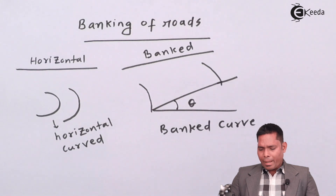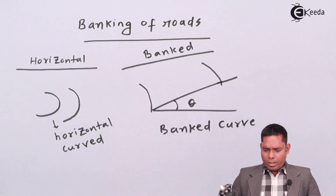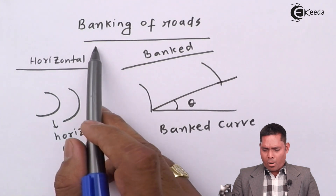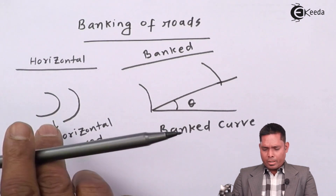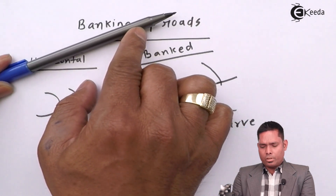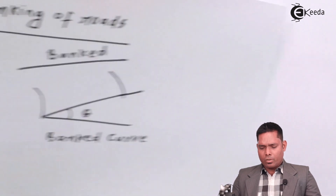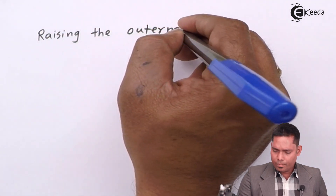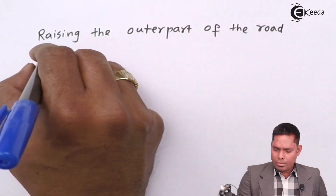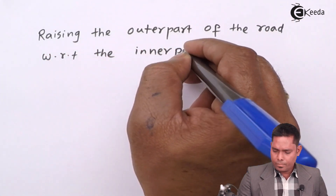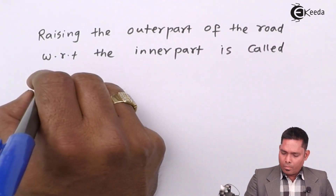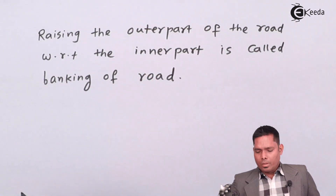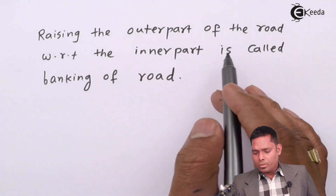Banking of road means the difference between a horizontal road and a banked road is that the outer part is raised up while keeping the inner part the same. So banking of road means raising the outer part of the road with respect to the inner part.